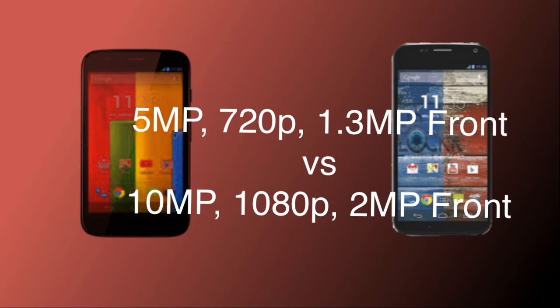The front-facing camera on the Moto G is 1.3 megapixels, while on the Moto X it is 2 megapixels. Overall, the Moto X definitely comes ahead of the Moto G in the camera department.